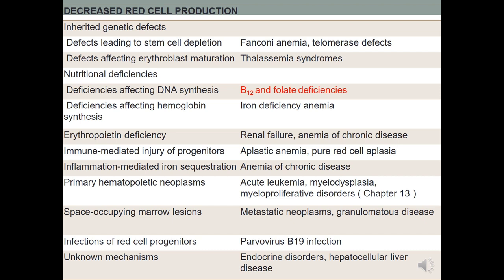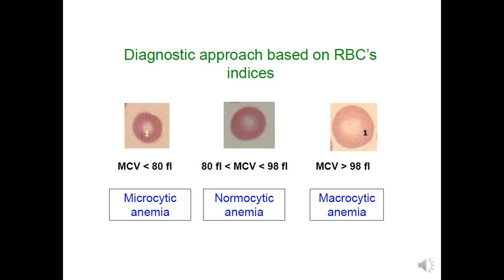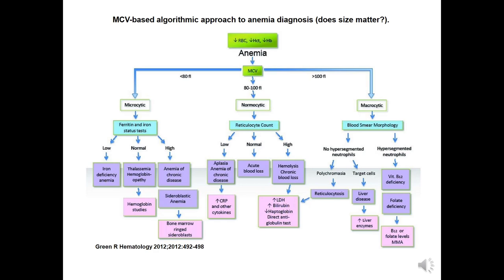These are the listed causes of decreased red cell production. We will focus on the anemias that result from vitamin B12 and folate deficiency. This diagnostic approach is based on RBC indices. The normal mean cell volume ranges between 80 to 98 or 100. If MCV is more than 100, we call it macrocytic anemia. If it ranges between 80 to 98 and there is anemia, we call it normocytic anemia. This algorithm covers everything you need to recall.